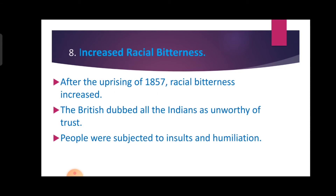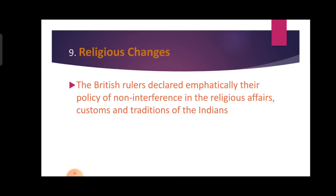The eighth result is increased racial bitterness. After the uprising of 1857, racial bitterness increased. The British dubbed all Indians as unworthy of trust and people were subjected to insults and humiliation. The ninth result is religious changes — the British rulers declared emphatically their policy of non-interference in the religious affairs, customs and traditions of the Indians.